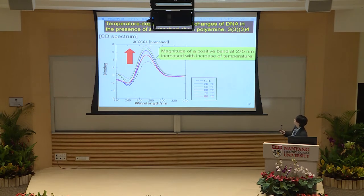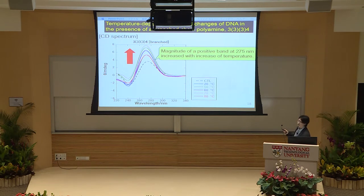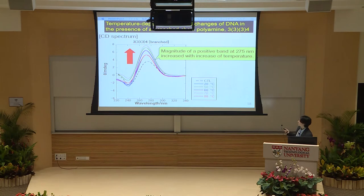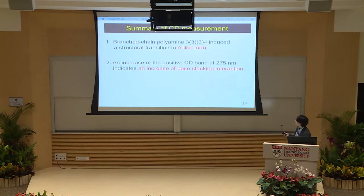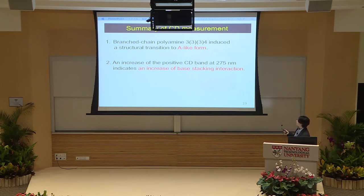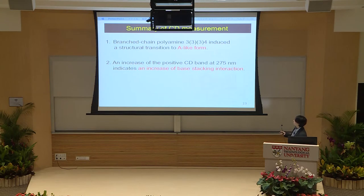This slide shows the results of CD measurement in the presence of branched-chain polyamine 3334. This is an important point: the magnitude of the positive band increased with increasing temperature. An increase of the positive CD band at 275 nanometers indicates an increase of base stacking interaction of DNA. This is a brief summary: branched-chain polyamine induced a structural transition to A-like form, and the magnitude of the positive CD band at 275 nanometers increased with increasing temperature, suggesting an increase of base stacking interaction of DNA.